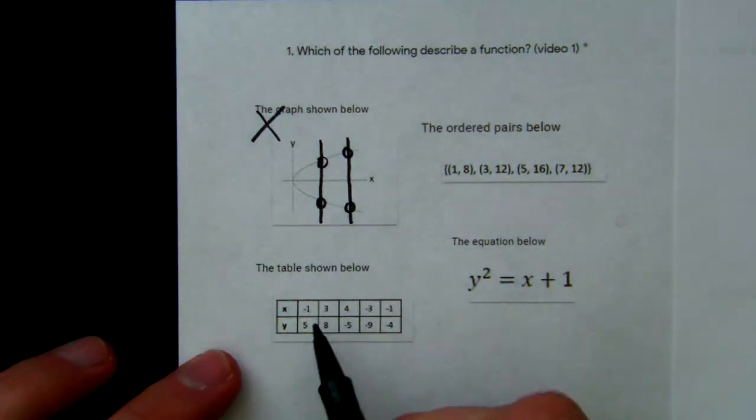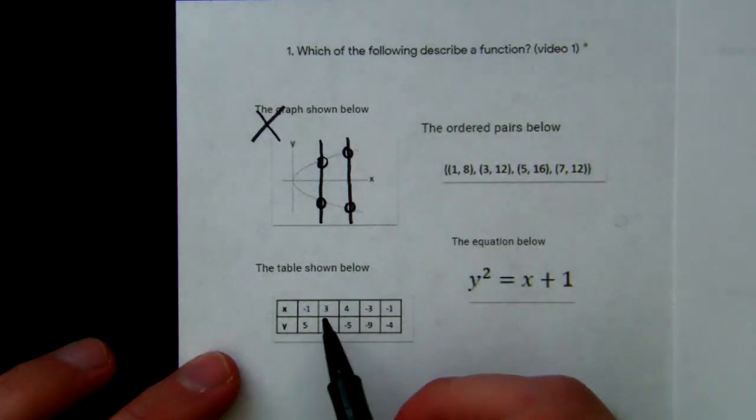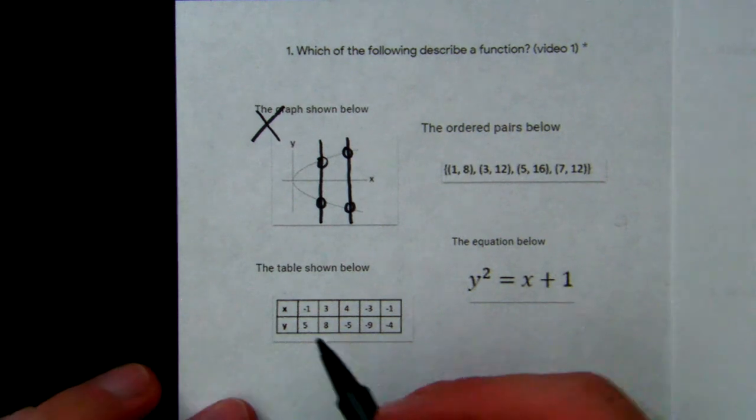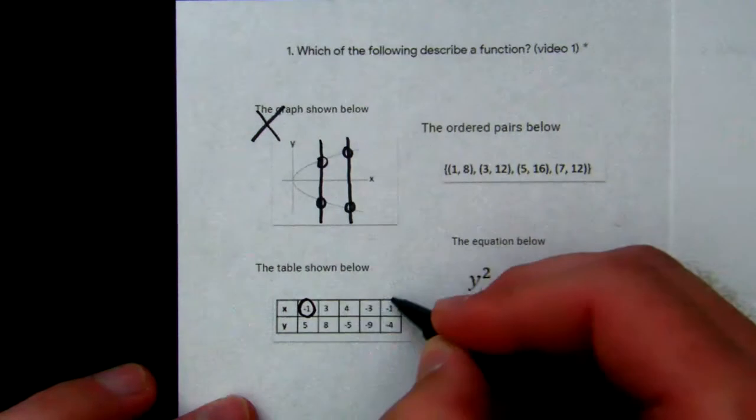Let's look at the table. What we look for in the table is our x-values first. We don't care about the y-values at first, we just want to look at the x-values. If we have any that are the same, we circle them. So negative 1, 3, 4, negative 3, and negative 1. We have two negative ones, so we're going to circle them.